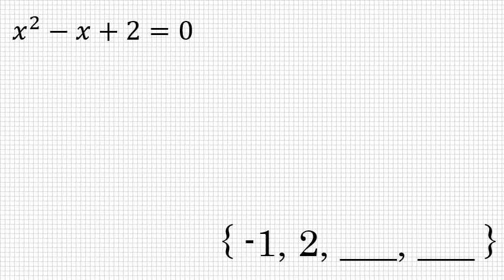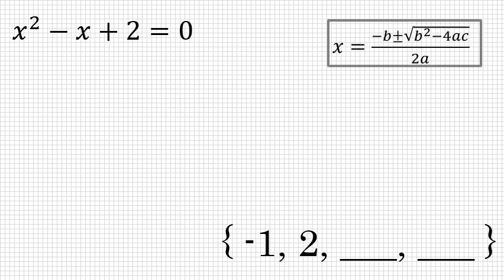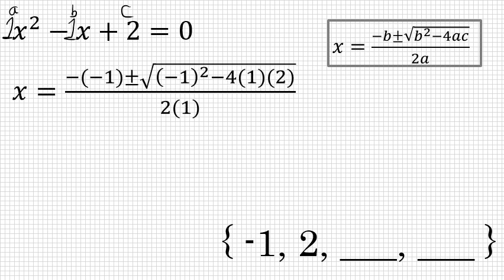x squared minus x plus 2 is a quadratic that does not factor. If you would attempt to factor this, you would find that it is prime. So we're going to have to use the quadratic formula to solve this. The quadratic formula: x equals negative b plus or minus the square root of b squared minus 4 times a times c. a is the coefficient in front of x squared, 1 in this case. b is the coefficient in front of the linear term, x to the first, negative 1 in this quadratic. And c is the constant, which in this case is 2.